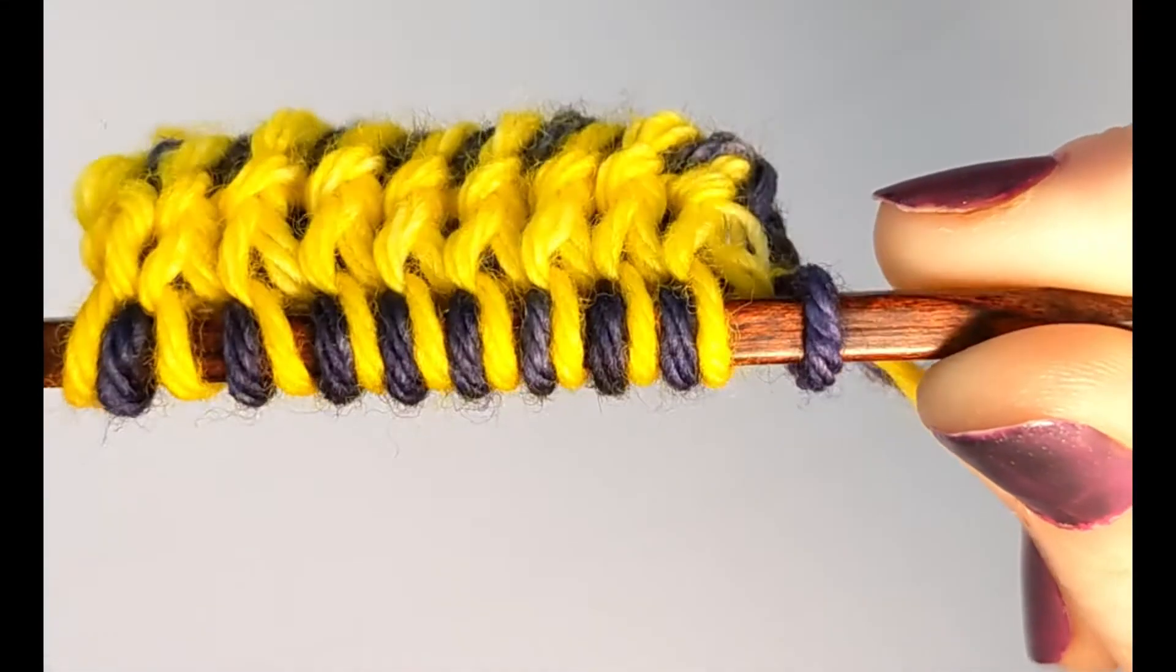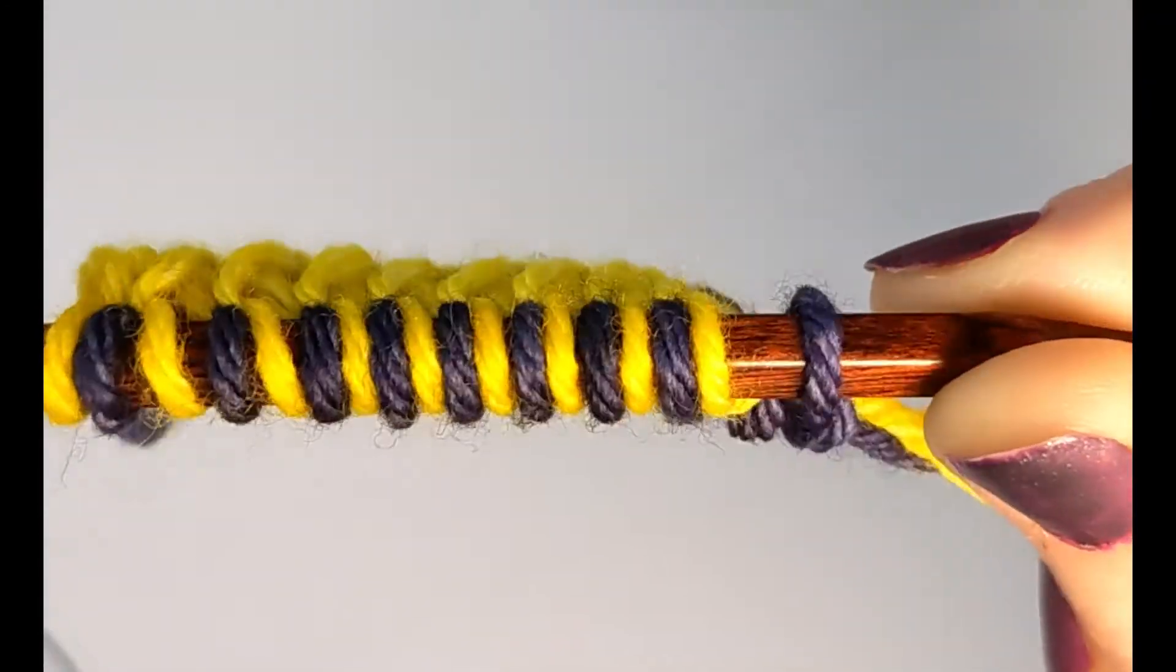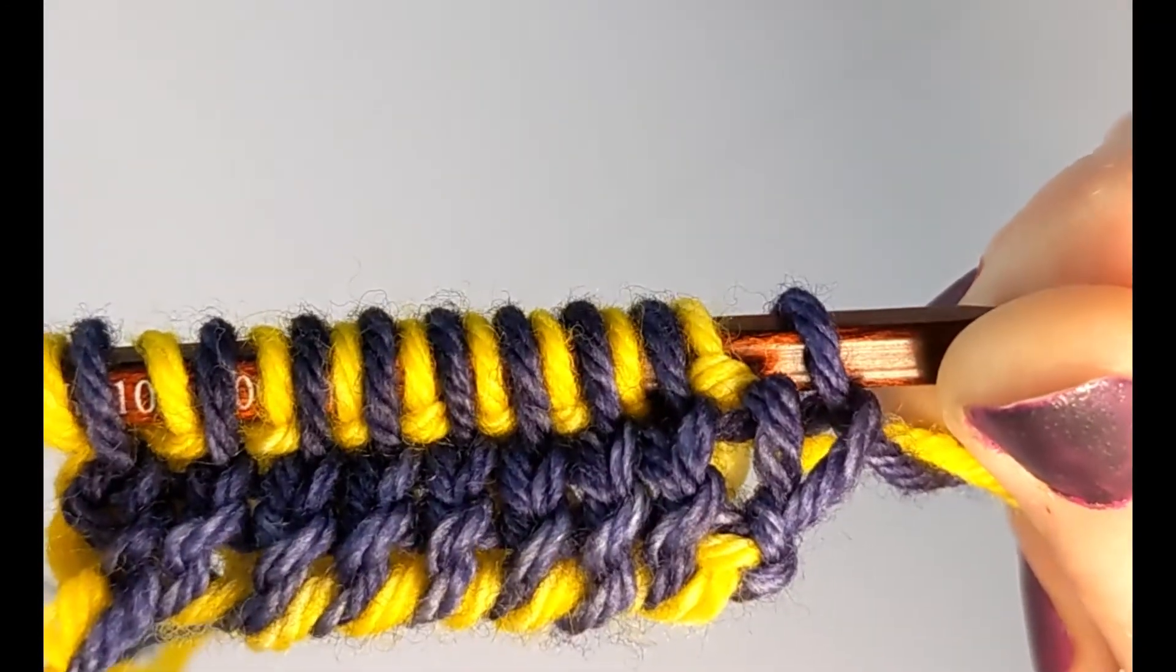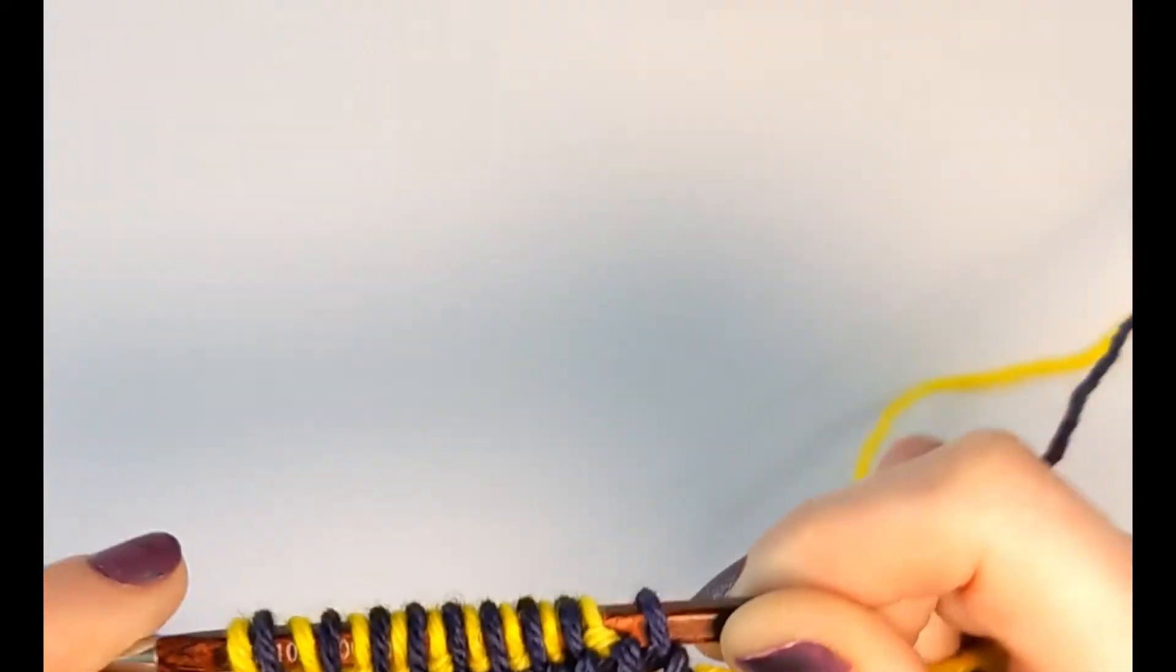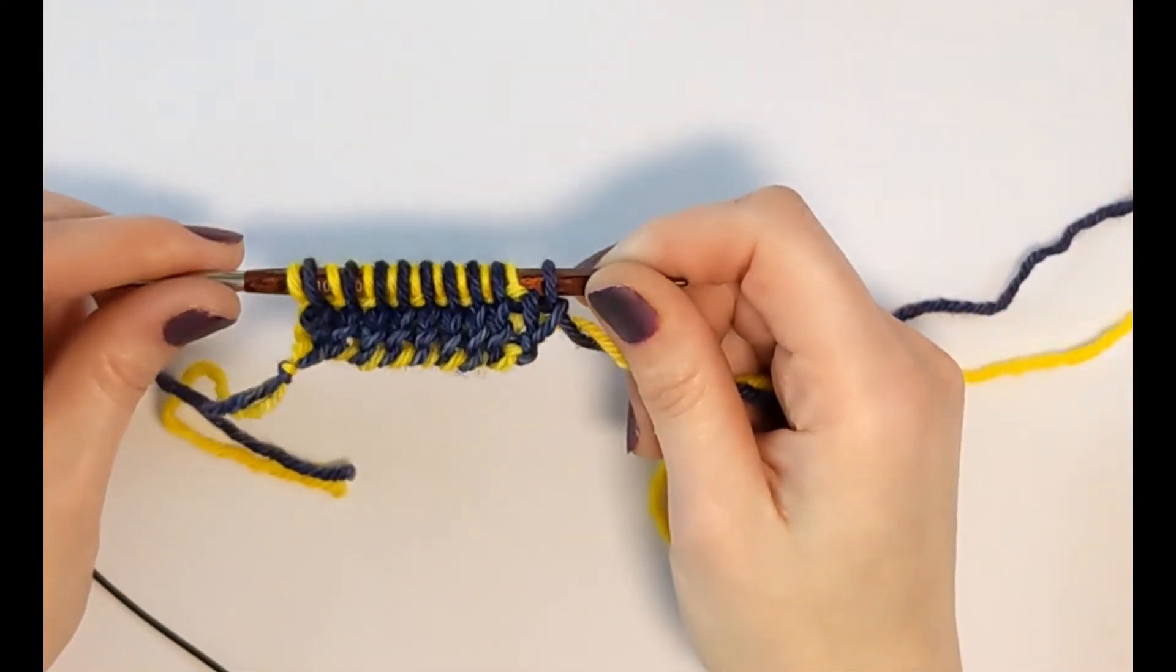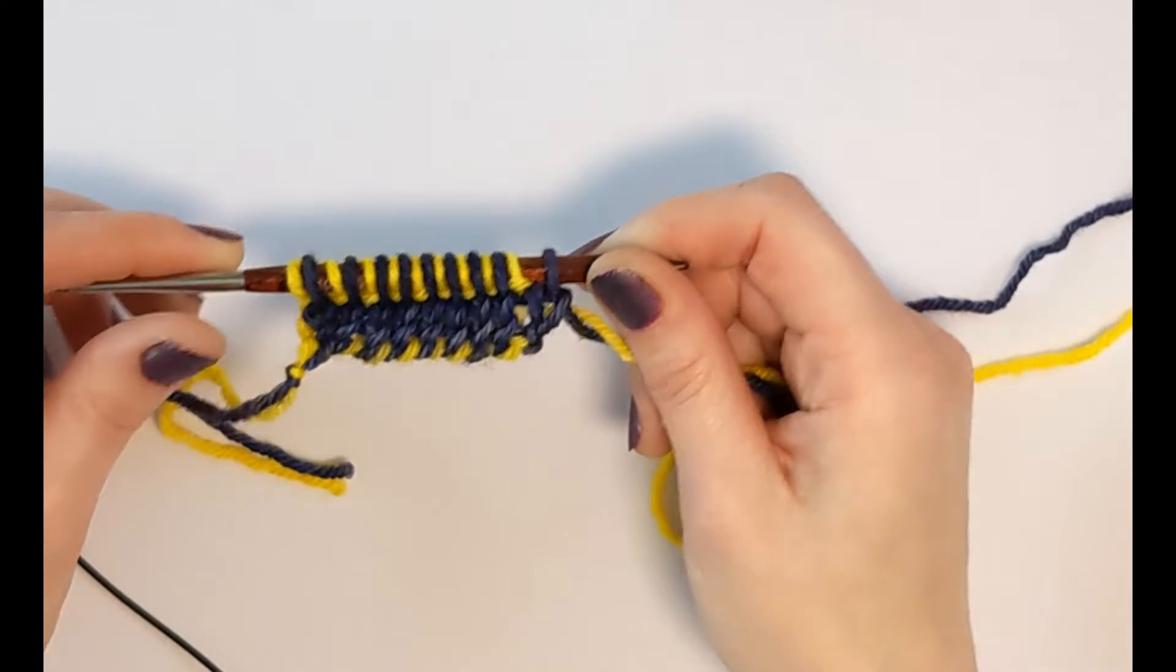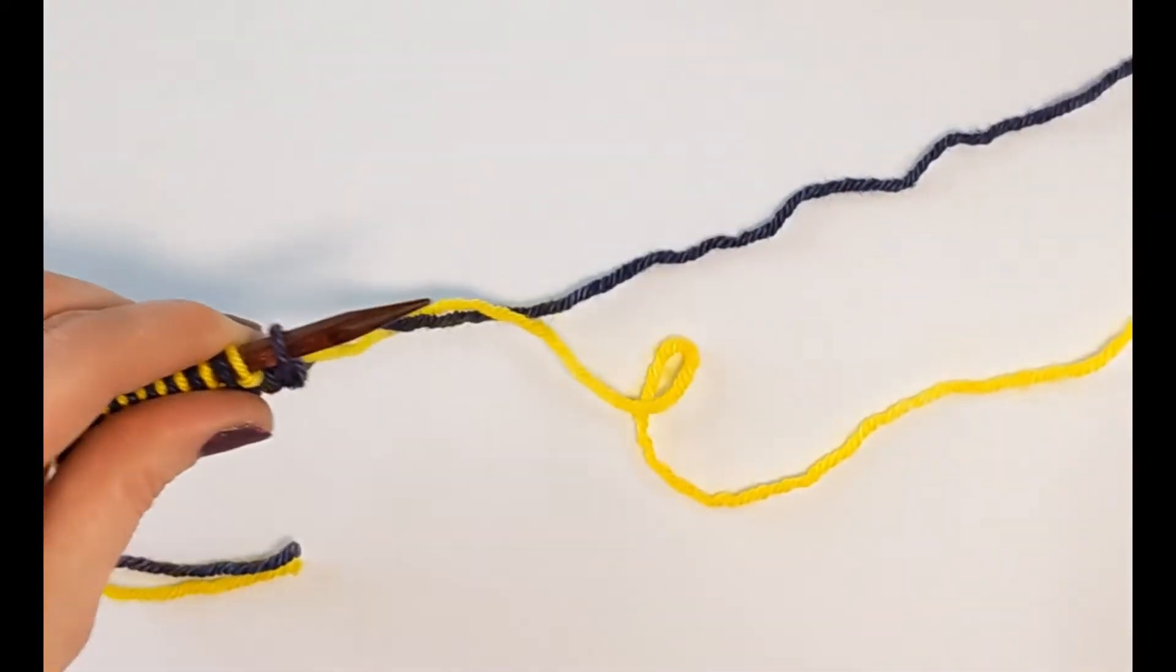Take a moment to admire your work. You should have knits facing on both sides, with one side in color one, in my case navy, and the other side in color two, in my case yellow.